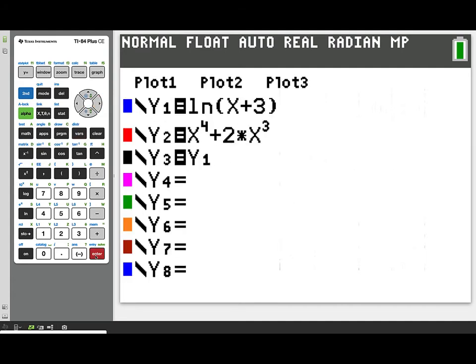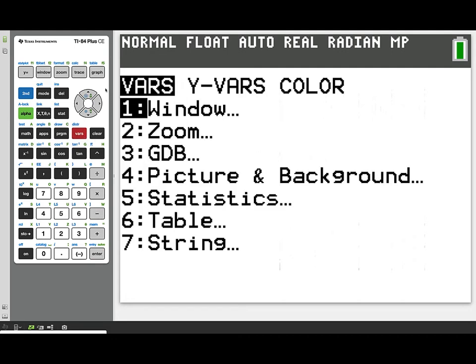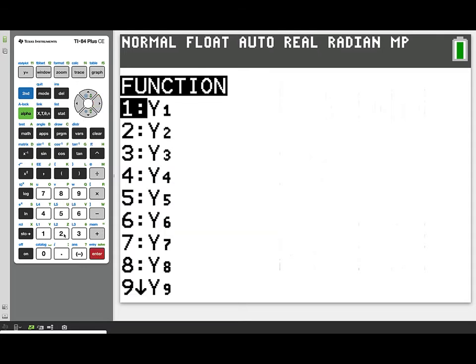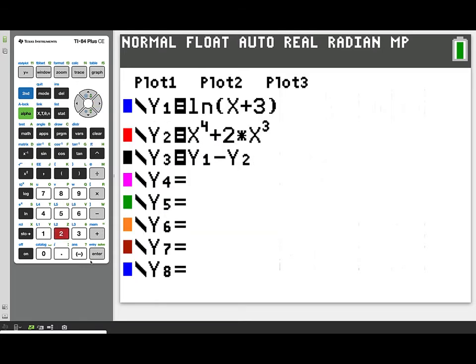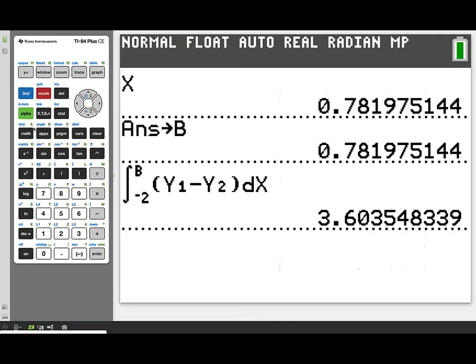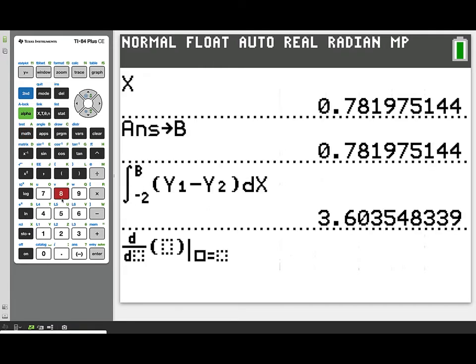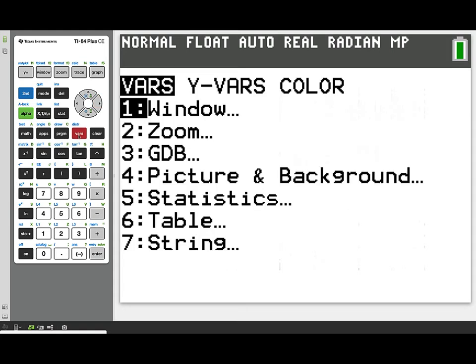We're going to set up a new y variable, y3, as the difference between the two functions, y1 minus y2. This is the function that's giving us the vertical distance between the two curves, as long as we're in that region where the blue curve is above the red curve. To find whether this is increasing or decreasing, we'll want to take a derivative.